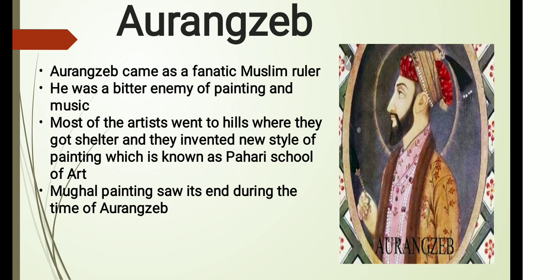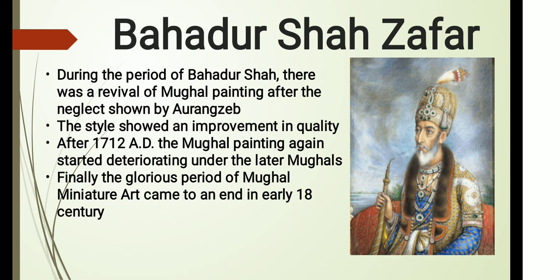Now we'll discuss the last emperor of the Mughal Empire, Bahadur Shah Zafar. During his period there was a revival of Mughal painting after the neglect shown by Aurangzeb, and the style showed an improvement in quality. Finally, after 1712 AD, Mughal painting again started deteriorating under the later Mughals. Retaining only the outer form, it became lifeless and lost the inherent quality of earlier Mughal art. The glorious period of Mughal miniature art came to an end in the early 18th century. We can say that Mughal art was organized by Mughals, developed by Mughals, and ended with Mughal rulers in India.